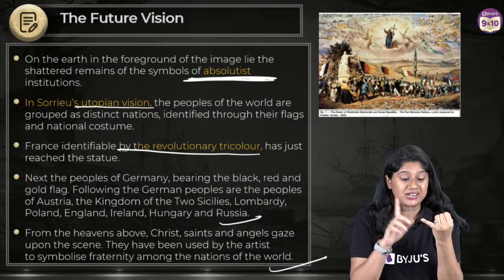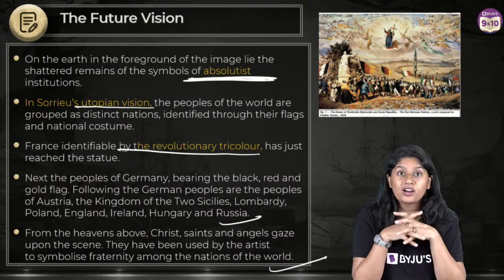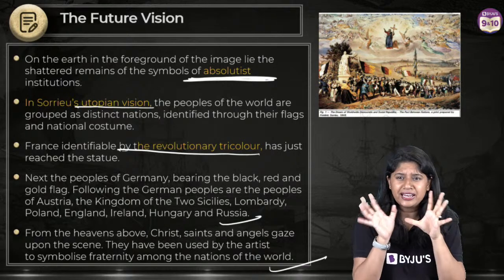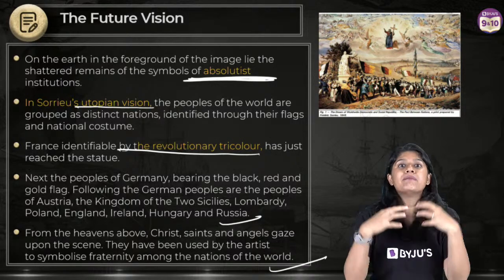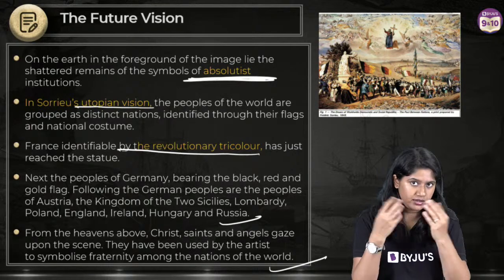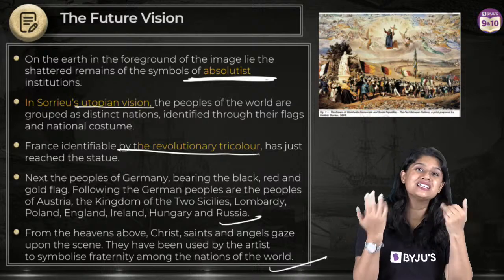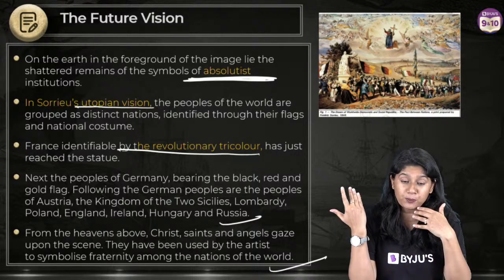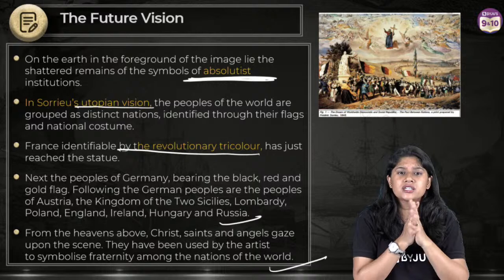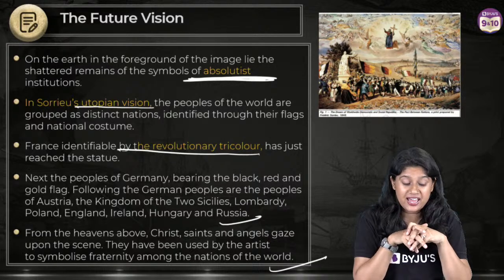Let me quickly repeat what we have studied. We started with nationalism — nothing but a feeling of pride for the country, wanting to do good, being conscious of the country. Utopia vision is a perfect imaginary vision. For example, sitting in this class and thinking 'I will get 100 out of 100 in SST' — that is the utopia vision. The painter Frederick painted a beautiful world where nations are moving towards liberty and freedom, and the king's rule is not there.